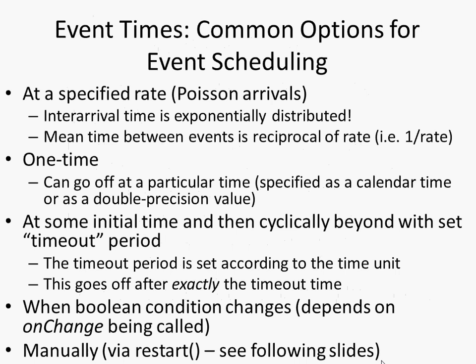For event timing, a given event — particularly a static event — can be specified in several ways. We can specify a rate, a Poisson arrival rate, so the event goes off periodically with some chance per week. It could be a one-time event set to go off at a particular time, specified as a calendar time within the model or as a time since the beginning of the simulation. We can set it cyclically after an initial time with a certain timeout period — so at time 0, 1, 2, 3 — doing calculations and outputting data. We can also set an event to go off when a condition changes, or manually fire it off.